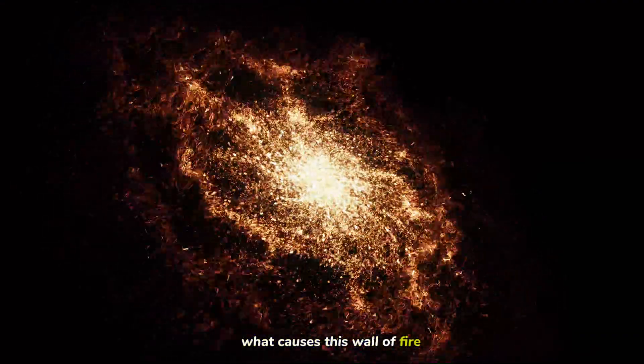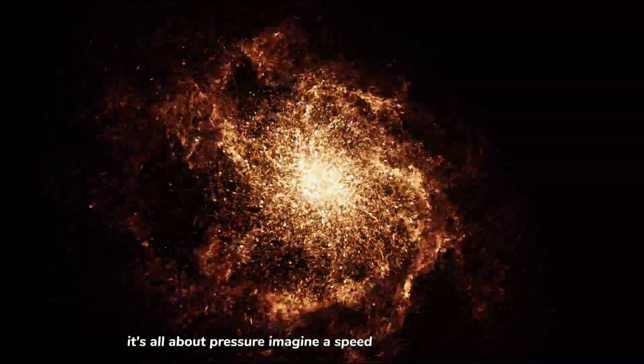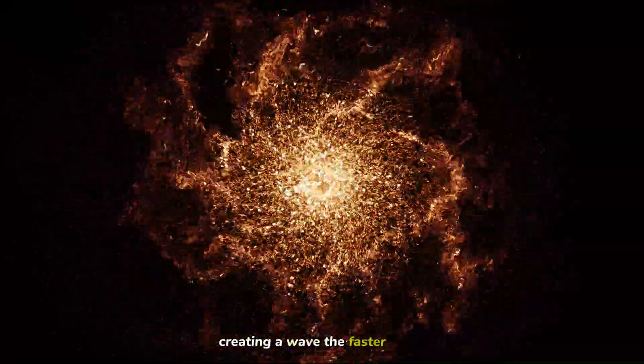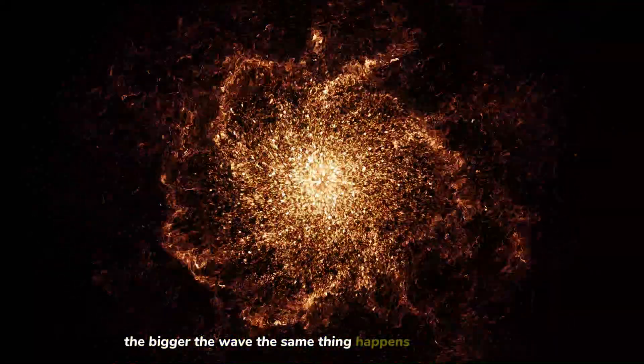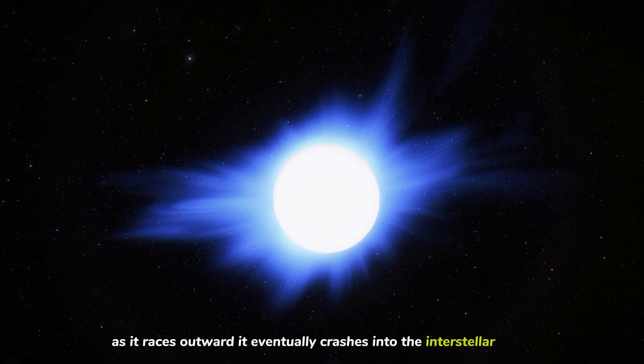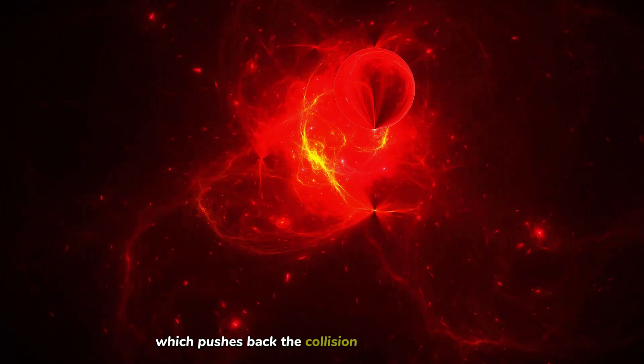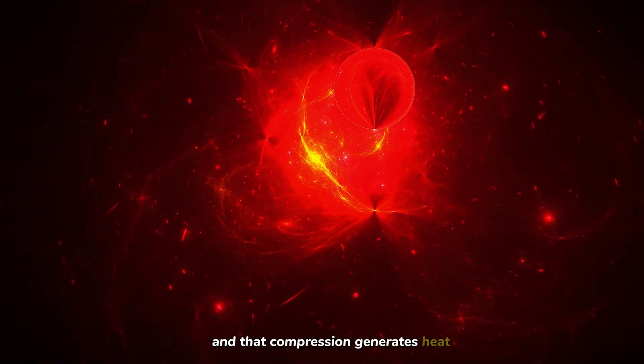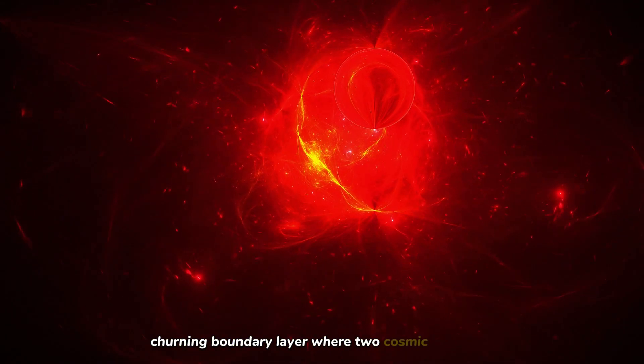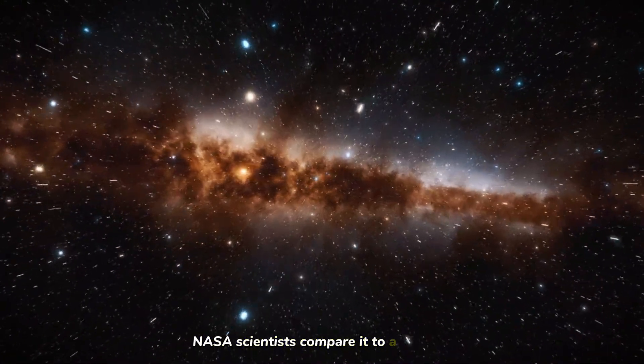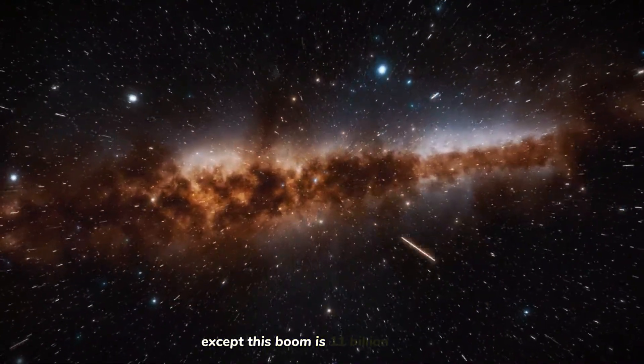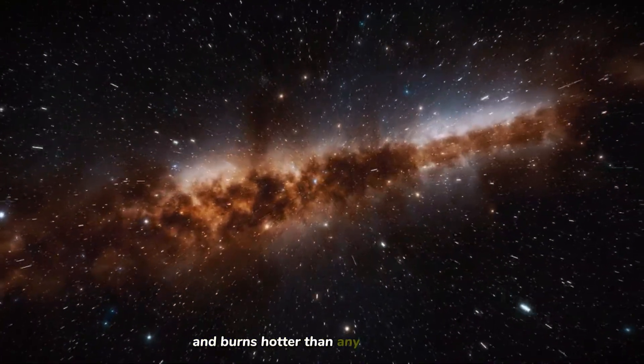What causes this wall of fire? It's all about pressure. Imagine a speedboat racing across a lake. At the front of the boat, water piles up, creating a wave. The faster the boat, the bigger the wave. The same thing happens with the solar wind. As it races outward, it eventually crashes into the interstellar medium, which pushes back. The collision compresses both sides, and that compression generates heat. Enormous heat. The result is a turbulent, churning boundary layer where two cosmic oceans meet. NASA scientists compare it to a bow shock, the same physics that creates sonic booms when jets break the sound barrier. Except this boom is 11 billion miles wide and burns hotter than any furnace on Earth.